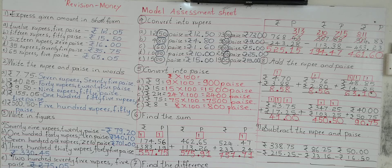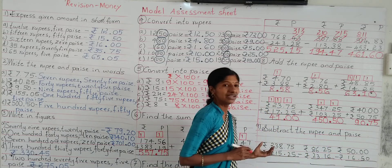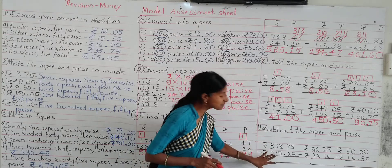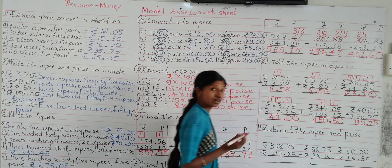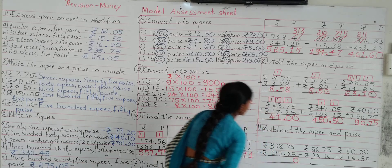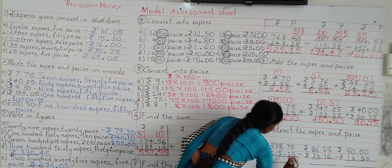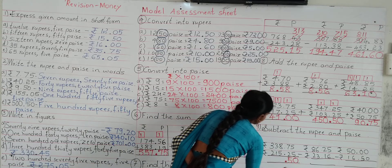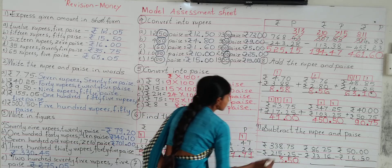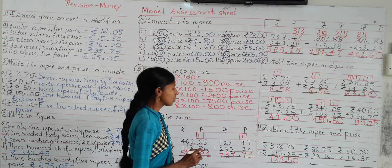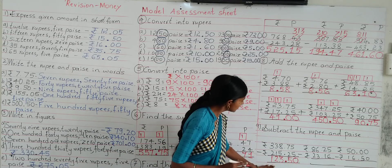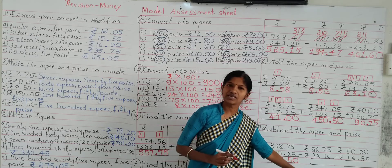Now look at question number 9: subtract the rupee and paisa. Here we have to follow the rules of subtraction. Remember, when you subtract given rupees and paisa, begin your subtraction with the paisa column. After the dot, two digits represent paisa. 5 minus 5 is 0, write in the ones column; 7 minus 2 is 5, write in the tens column. Insert dot. 8 minus 5 is 3, write in the hundreds column; 3 minus 1 is 2, write in the thousands column; 3 minus 2 is 1, write in the ten-thousands column. So what is the difference? 123 rupees 50 paisa.